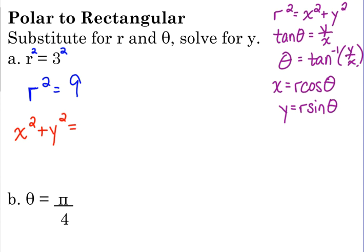So we're going to substitute x squared plus y squared for r squared. So x squared plus y squared equals 9 is the equation of a circle with a radius of 3 in rectangular form, in a center of the origin.